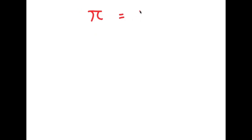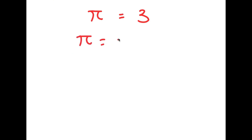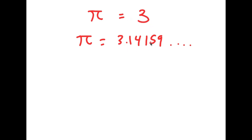In this video, I'm going to be proving to you guys that pi is equal to 3. As you probably already know, pi is an irrational number, meaning it doesn't have a whole number value — it's actually equal to 3.14159 and on and on forever. So in this video, I'm going to be proving that pi is actually equal to 3 and not the irrational number that we all know it is.